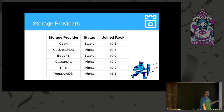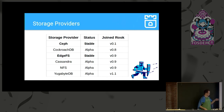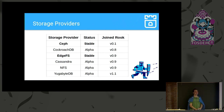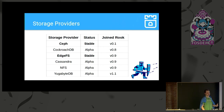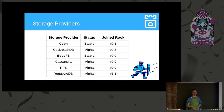It's not just about Ceph. Rook also supports other complicated storage systems: Ceph, CockroachDB, EdgeFS, Cassandra, NFS, YugaByteDB. Shout out to the YugaByteDB people — they just joined with version 1.1. The idea is to grow that even further. The broader vision is: you create your Ceph cluster using the Rook Ceph operator, and you can create a YugaByteDB instance and tell it to use storage from that Ceph cluster via normal Kubernetes persistent volume claims.